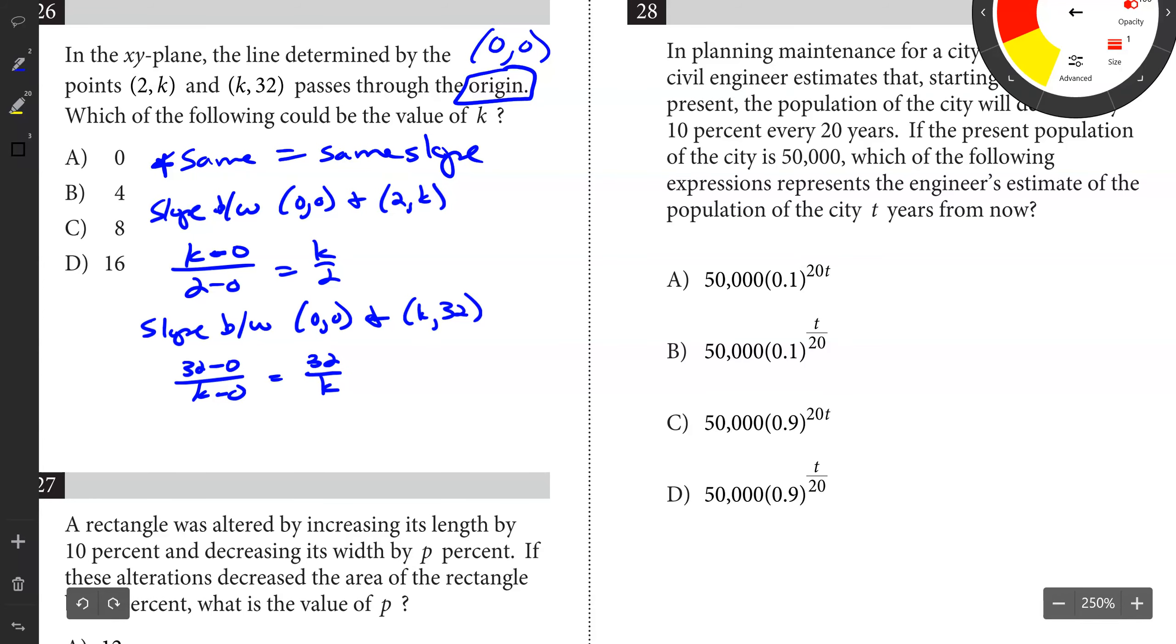Because these two points are on this line that also passes through 0, 0, no matter which two points I pick, we're going to have the same slope every time. I chose to find the slope between 2K and 0, 0 and K, 32 and 0, 0 because that would give me two equations that have K in them. Now I can set them equal to solve for K. K over 2 equals 32 over K. Cross multiply. K squared equals 64. So K equals plus or minus 8, but the only possible answer is positive 8.